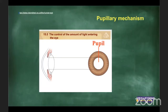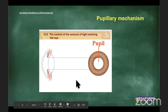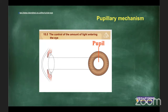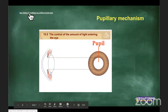The pupil controls the amount of light entering your eye. In very bright light we squint, and our pupils also become much smaller — the scientific word is 'constrict.' In very dim light or in the dark, your pupil will dilate — it becomes bigger — to allow more light in.